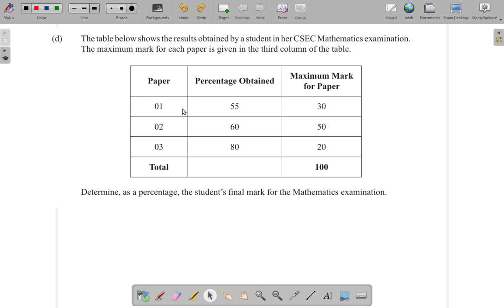What happens in paper 1? She got 55% and the marks available is 30. For paper 1, the percentage obtained was 55%, which means 55 per 100.